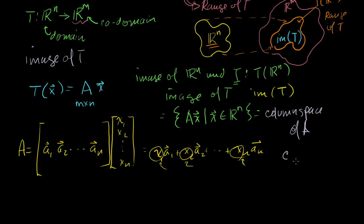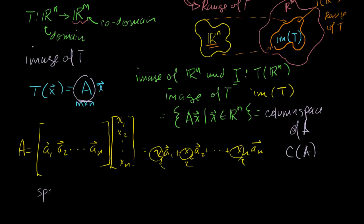That is equal to the column space of A, sometimes denoted C(A). So the image of any linear transformation — the subset of its codomain when you map all elements of its domain — is equivalent to the column space of the matrix that the transformation can be represented as. The column space is just the span of all the column vectors of your matrix — all of their linear combinations. Anyway, hope you found that interesting, and we'll be able to use these results in the future.